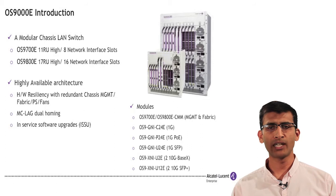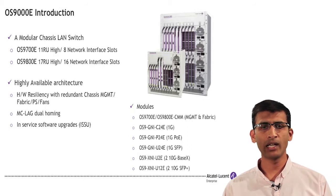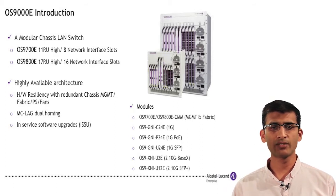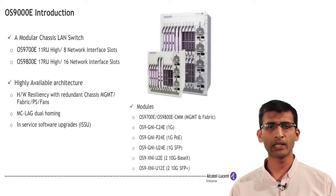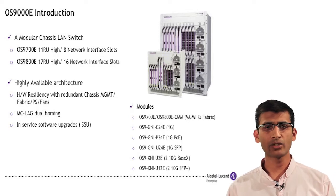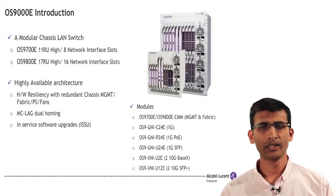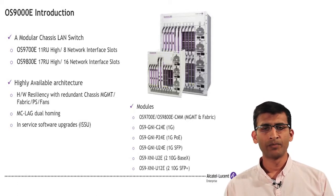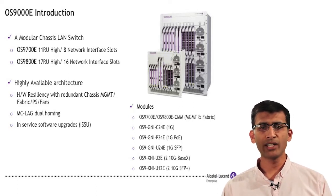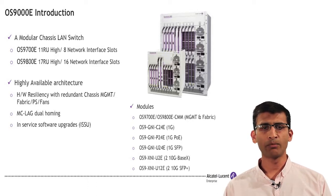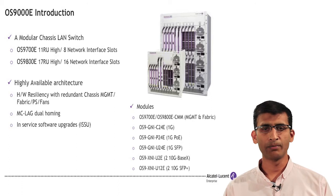The OmniSwitch 9000E with its highly available architecture offers enterprises and service providers gigabit and 10 gigabit capacity links, advanced layer 2 and layer 3 switching, high availability with multi-chassis link aggregation which is further enhanced through in-service software upgrades. The platform supports a wide range of network interface card options for 1 gigabit and 10 gigabit, providing operational flexibility.